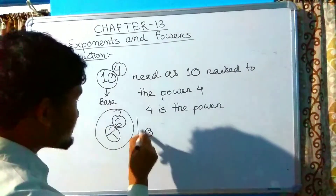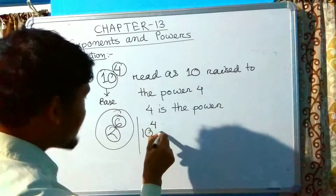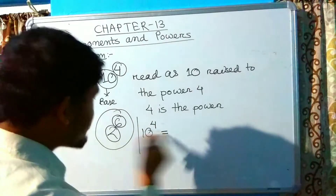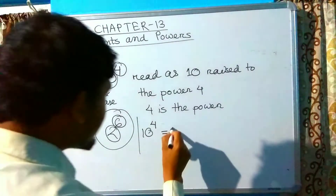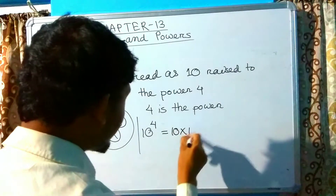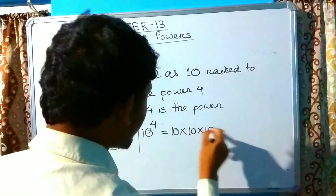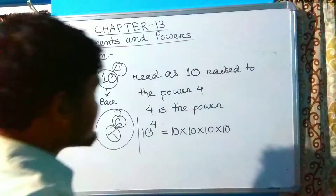If we expand 10 raised to the power 4, it becomes 10 multiplied by 10, multiplied by 10, multiplied by 10 — that is, 10 appears four times as a factor.